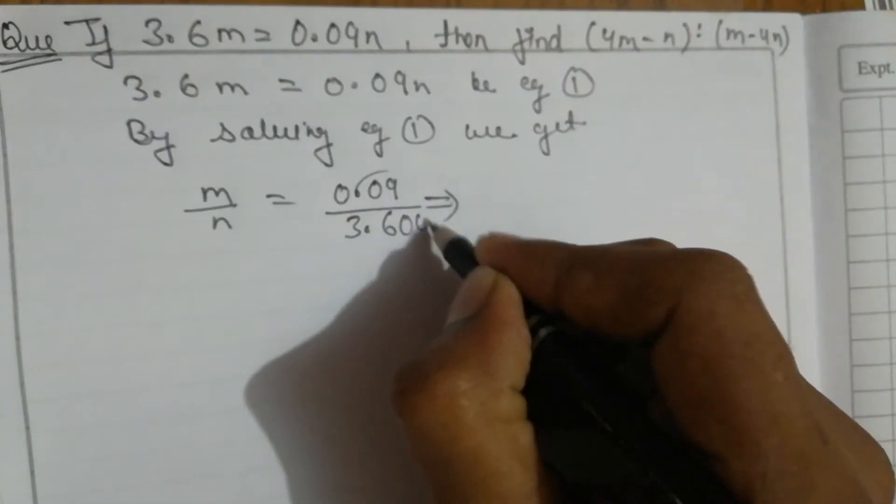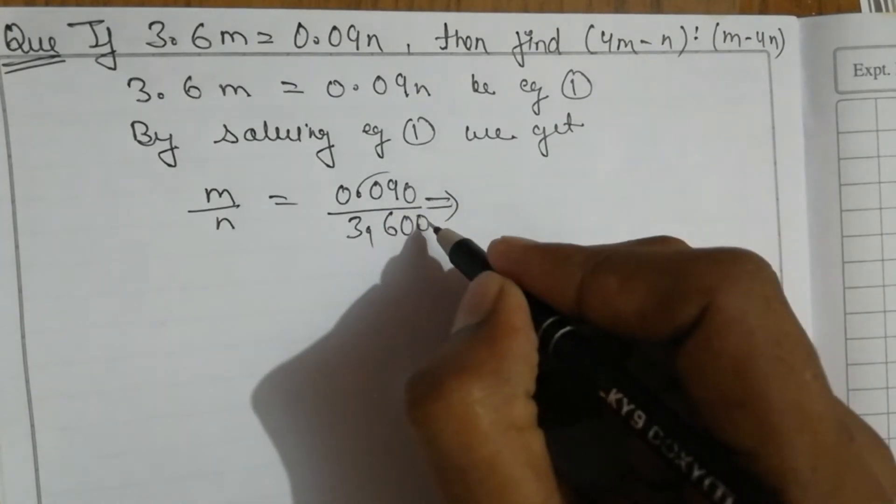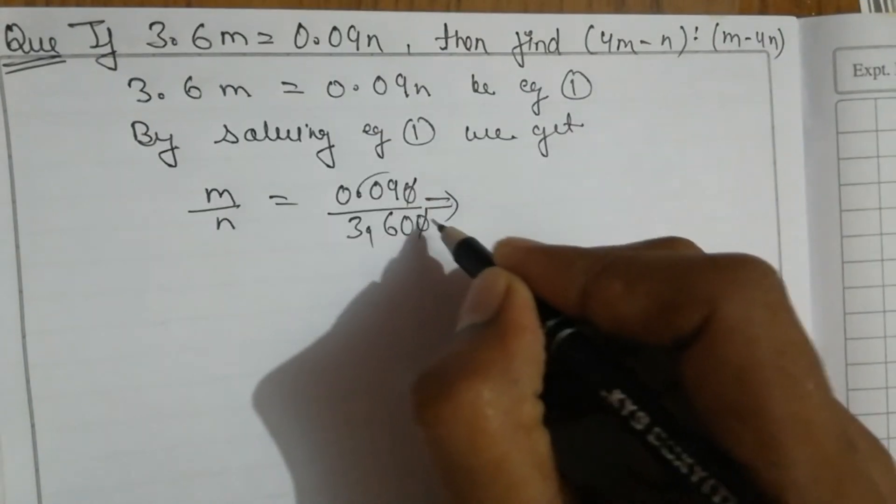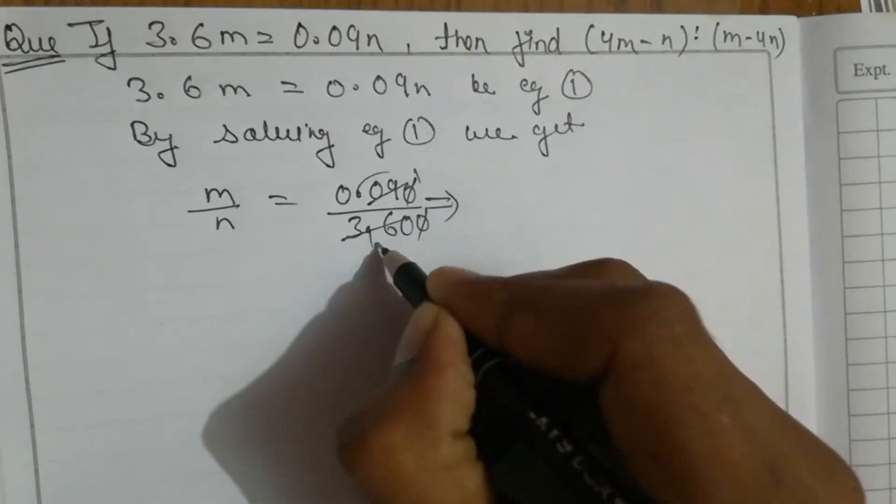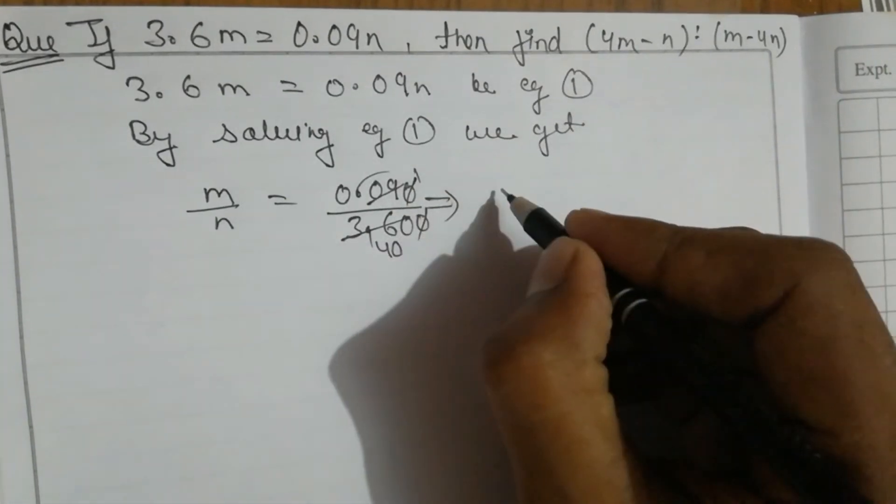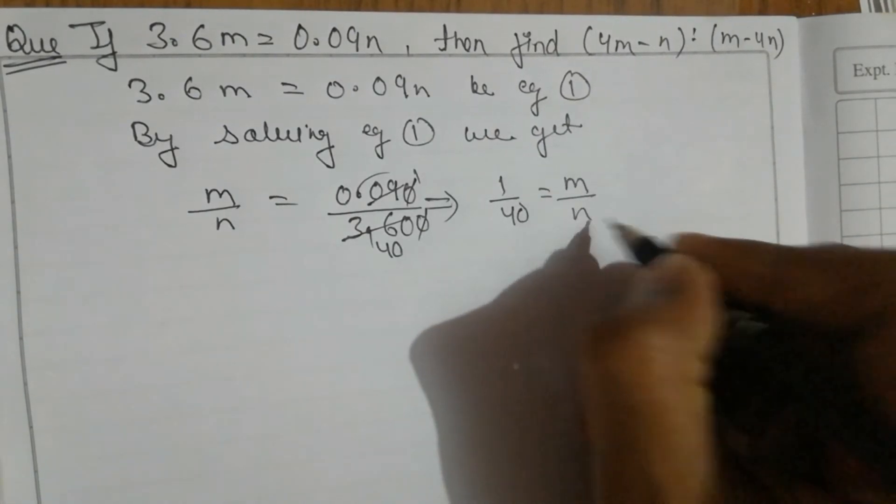it takes two zeros; when we remove one decimal it takes one zero. So 9 over 360 equals 1/40, which is m/n.